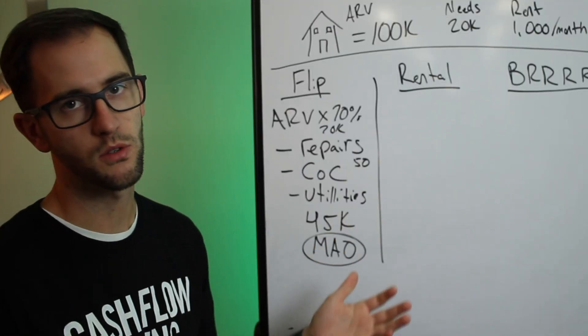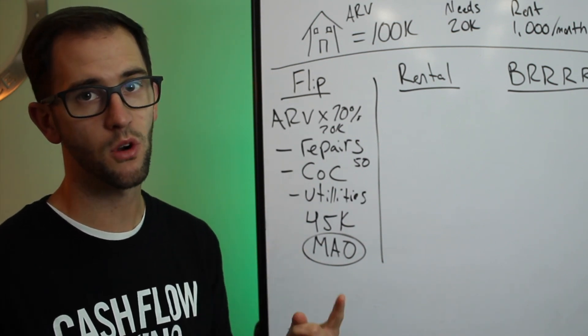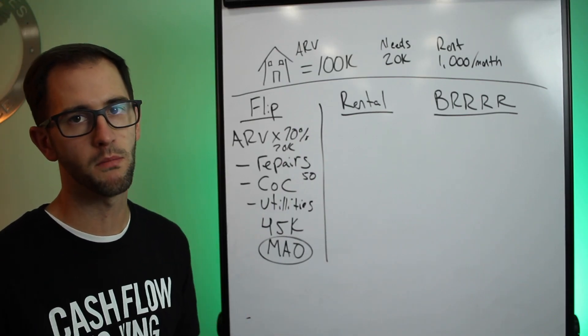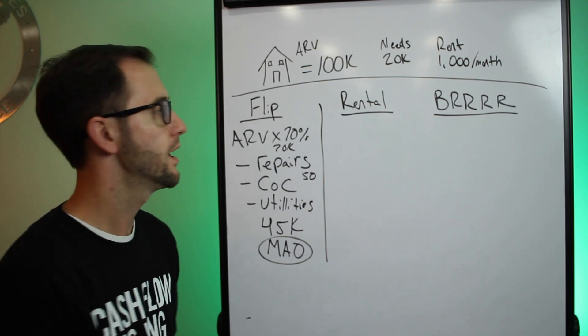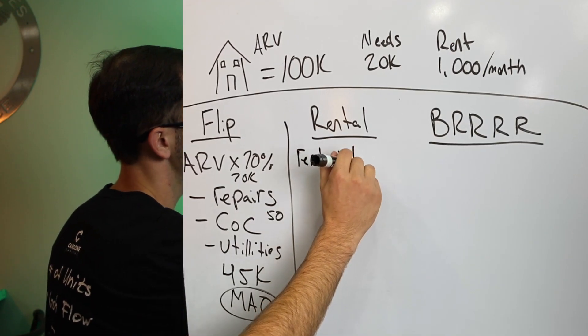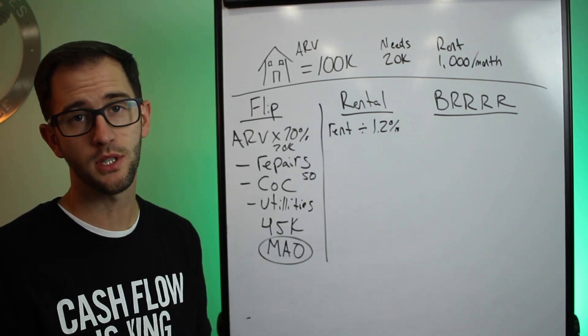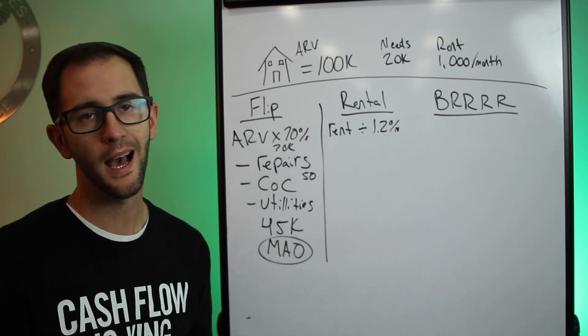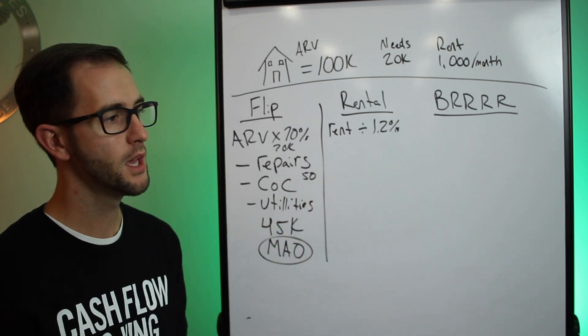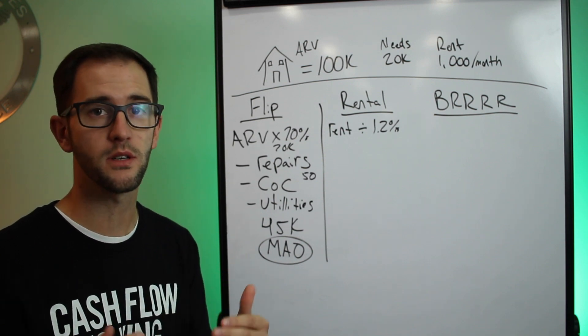All right, so now let's look at a rental. The big difference between flipping and a rental, when just analyzing the deal, is for starters, you don't care about the ARV, right? What a property's worth may go into the financing, but for most cases, you're worried about the rent. And so when I'm analyzing a rental, I look at the rent divided by 1.2%. So this is my take on the 1% rule.